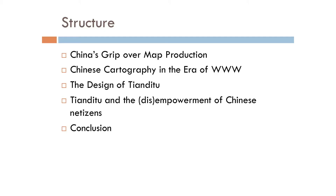Let me begin from the very beginning. I will talk about China's grip over map protection and how China historically has tried to control the dissemination of geographic information in paper formats and also with the advent of the internet — how China has continued to extend these measures to control online mapping services. Then I will talk about the technical part of TMD2 and whether it empowers Chinese citizens or does the opposite.